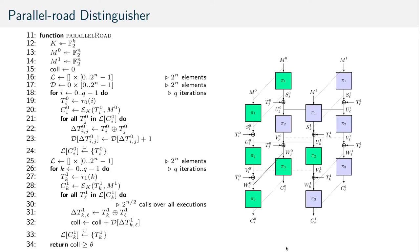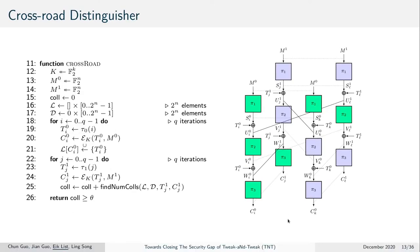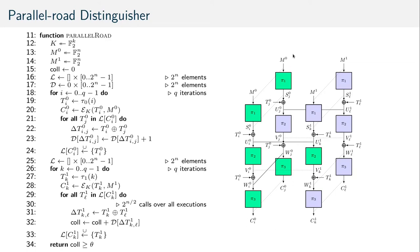The parallel road distinguisher works similarly. However, in contrast to the crossroad distinguisher where we wanted collisions in the ciphertext between different messages, the parallel road distinguisher seeks collisions in the ciphertext for the same messages. Since we start from the same messages, pairs collide after the first permutation call. With probability 2^(-n), a pair with different tweaks collides after the first tweak addition, and if both pairs have the same tweak difference, the second pair also collides with probability 2^(-n), tracking to the second permutation call.